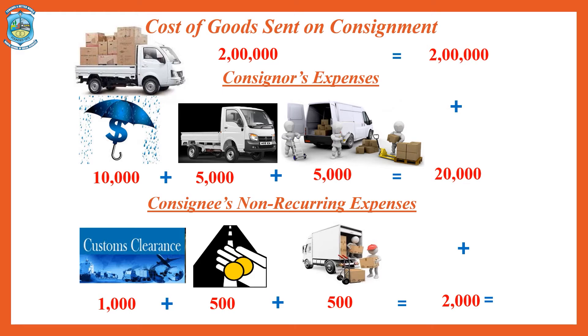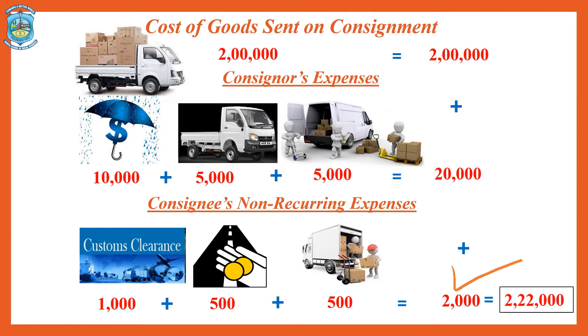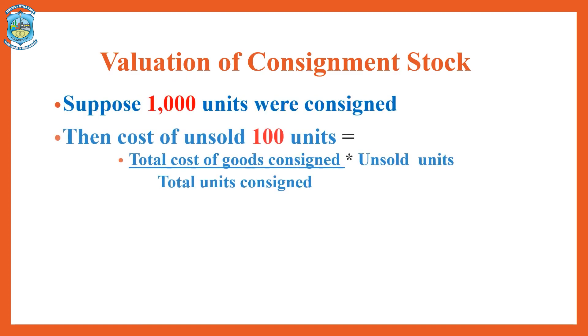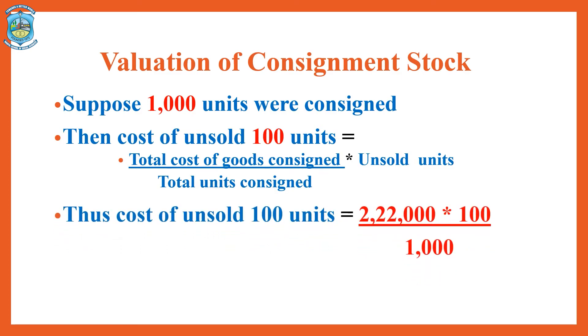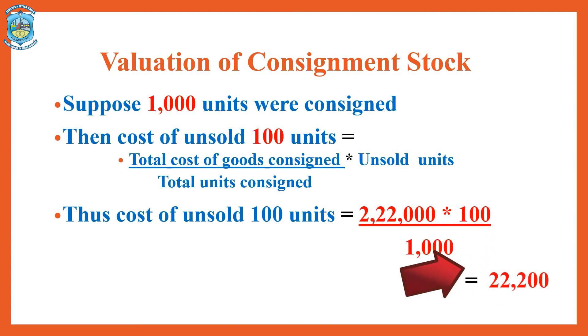The total cost of goods is therefore two lakhs plus twenty thousand plus two thousand, which equals rupees two lakh twenty-two thousand. Now suppose one thousand units were sent in total, out of which only one hundred units are unsold. To calculate the consignment stock value, divide two lakh twenty-two thousand by one thousand to get the cost per unit, then multiply by one hundred. This gives a consignment stock value of rupees twenty-two thousand two hundred.